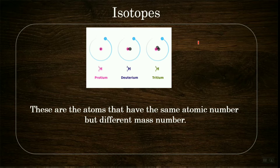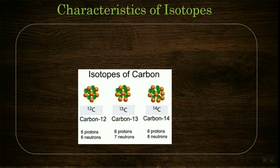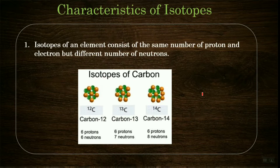So what are isotopes? Isotopes are atoms of the same element that have the same atomic number but different mass numbers. If different atoms of the same element have the same atomic number but different atomic mass numbers, they are called isotopes. Now let's look at the characteristics of isotopes.